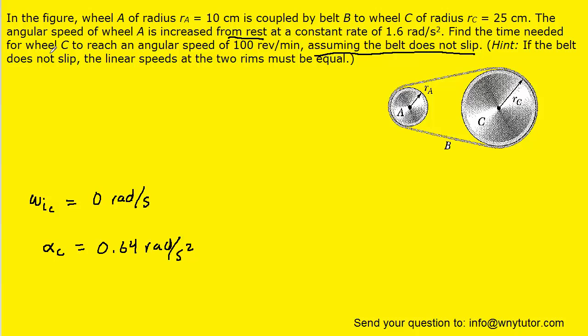We're looking for the time required for wheel C to reach an angular speed of 100 revolutions per minute. That means the final angular speed of wheel C is going to be 100 revolutions per minute. That's in a non-standard unit so we're going to have to convert that into radians per second. We just recall that one revolution is equal to two pi radians.